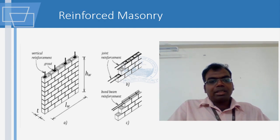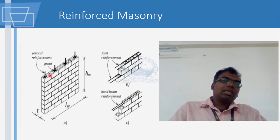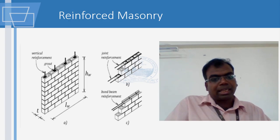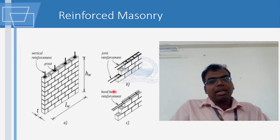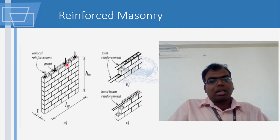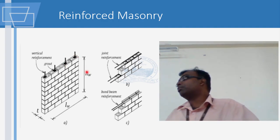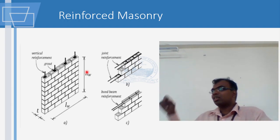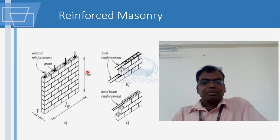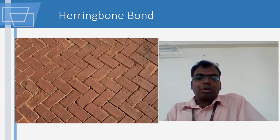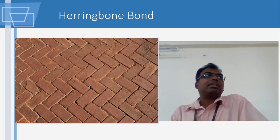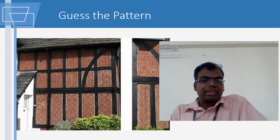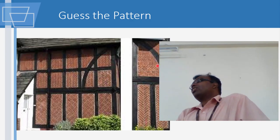This is called a rat trap bond. You can keep pockets where you can fill with concrete and also keep some reinforcement - this will become a reinforced wall. It has better performance when subjected to earthquake. You can insert vertical steel rods as well as horizontal reinforcements. You then grout - pour some cement mortar paste into the gap - it will harden and act like many columns within the brick wall.